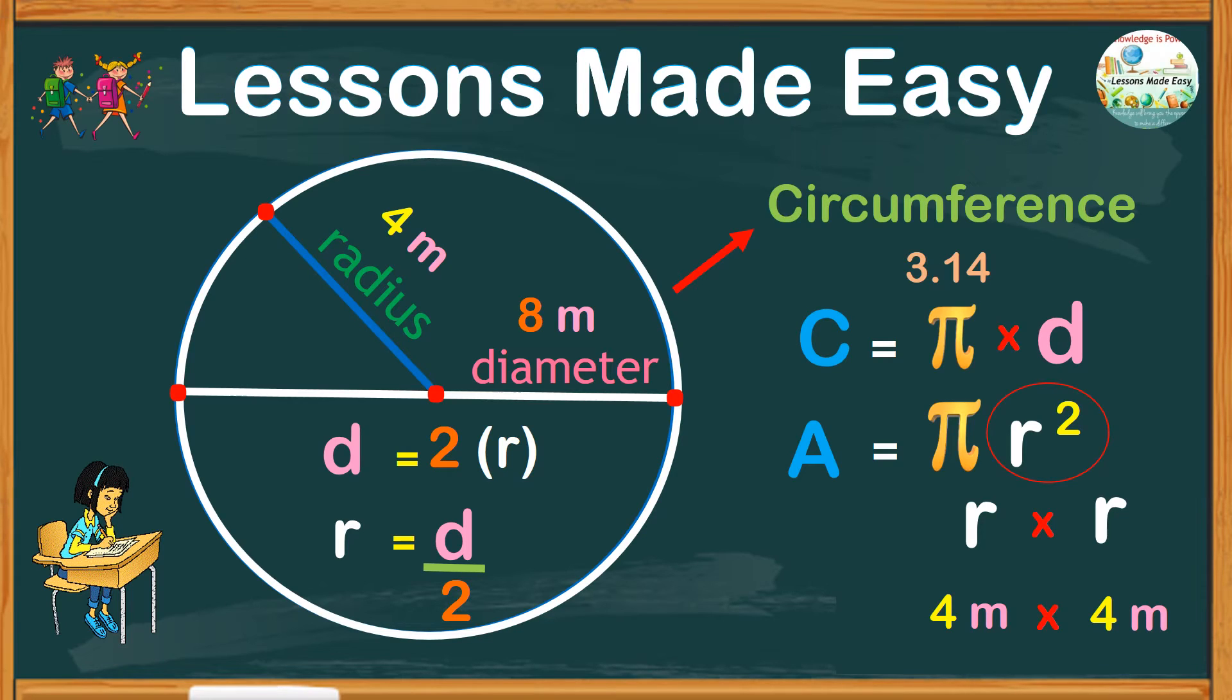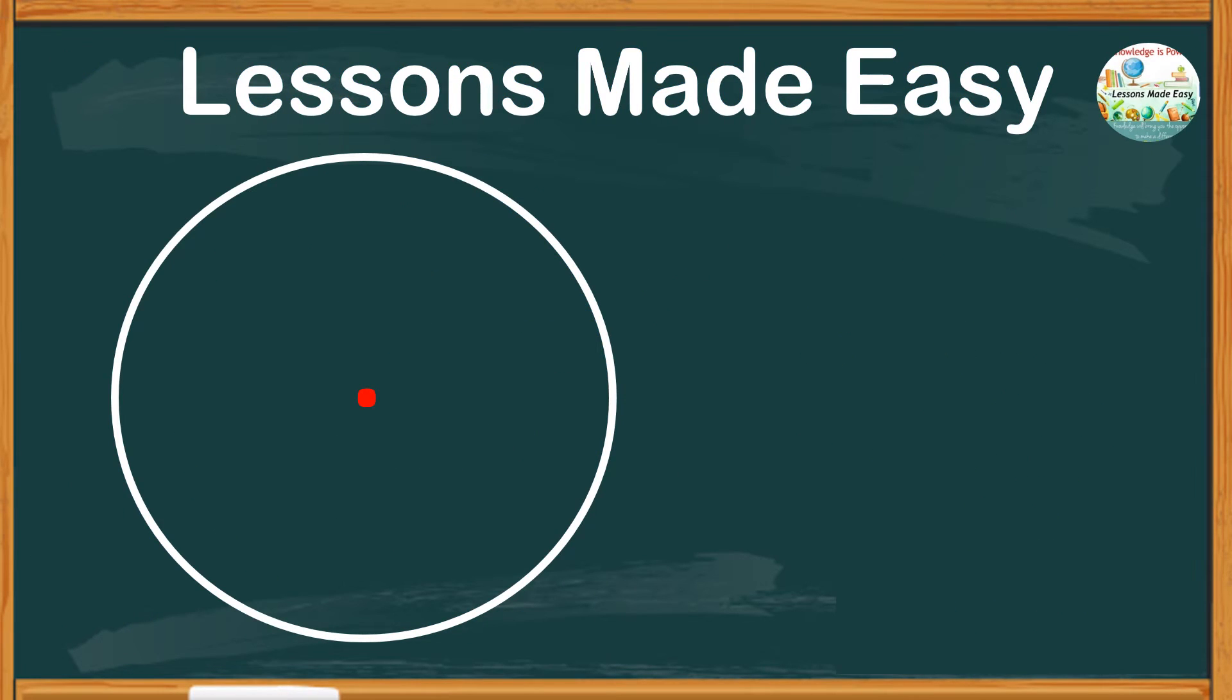To clearly understand the concept of finding the area of a circle, let's try another illustration. Take a look at this circle with a radius of 5 centimeters. To find the area, we would go with the formula: area equals pi r squared.